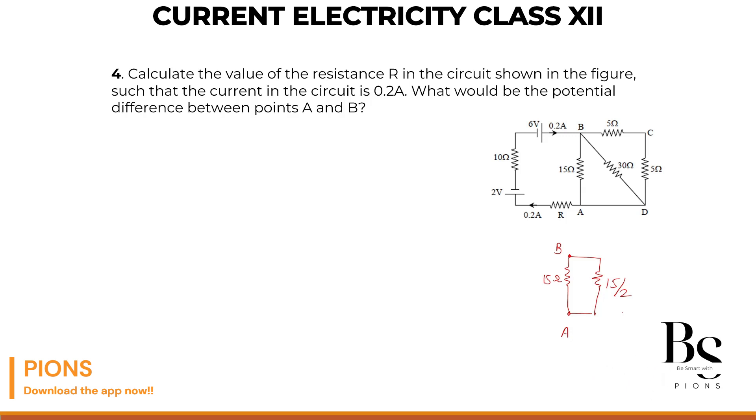So if they are in parallel, 15 into 15 by 2 whole divided by 15 plus 15 by 2. R1 into R2 whole divided by R1 plus R2. That is our R equivalent directly. So 15 into 15. 15 is 225 by 2 whole divided by 30 plus 15. 45 by 2 and 2 cancels. We left with 225 by 45. Let's simplify. 5, 9s are. 5, 4s are. 45s are. And 9, 5s are. Clear.